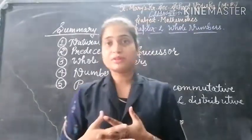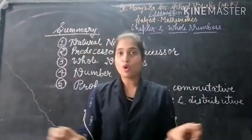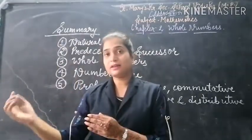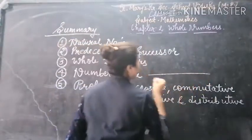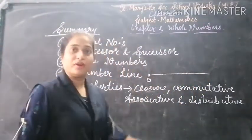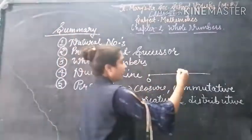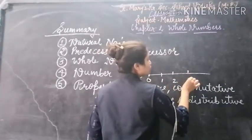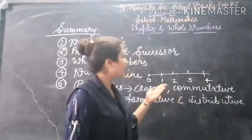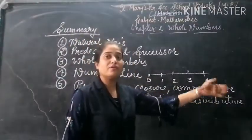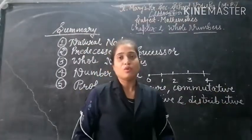After whole numbers, we studied the number line. We draw a line and mark the starting point as 0, then move further to the right side. Moving right, this becomes 1, 2, 3, 4, and so on. This is known as the number line, where numbers increase one by one moving to the right side.